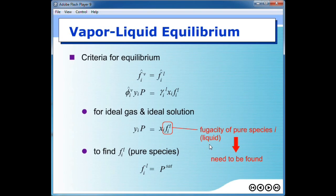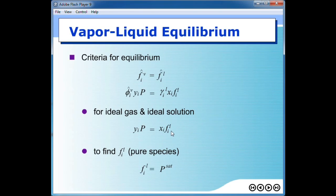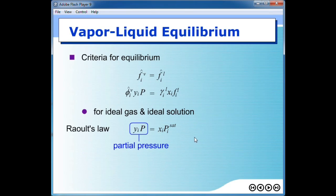Keep this in mind and go back to the original equation. Plugging this result back in, you get the partial pressure: y_i times P equals x_i times the vapor pressure of species i. This is what we call Raoult's law. Raoult's law can be used for calculation of mole fraction in either vapor or liquid phase, as long as the species of interest has high concentration in the liquid phase.